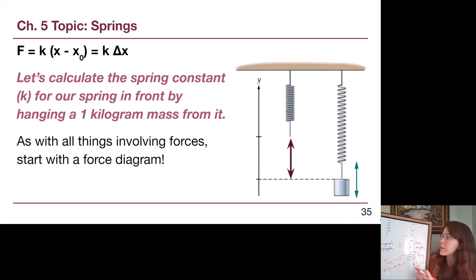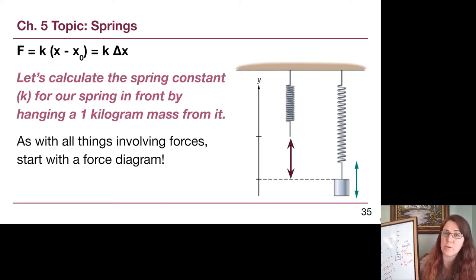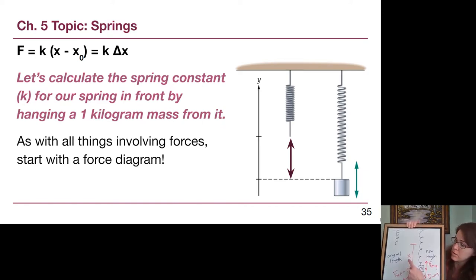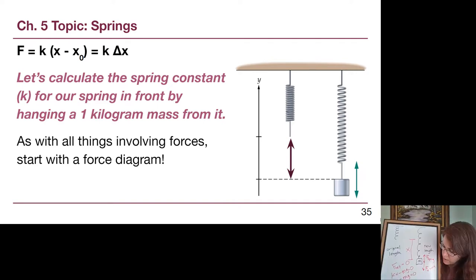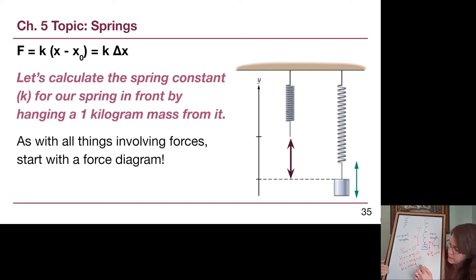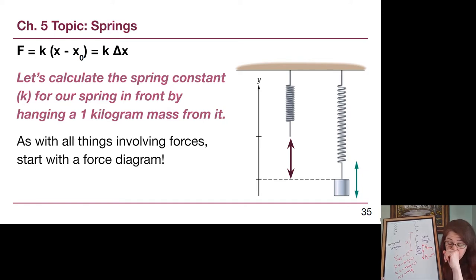Those two forces have to be equal and opposite. The spring force is k times x, and gravity is mg, which means that for this simple little setup, k times x minus mg equals zero. We'll add mg to both sides. X equals mg over k.